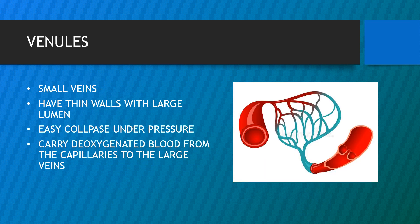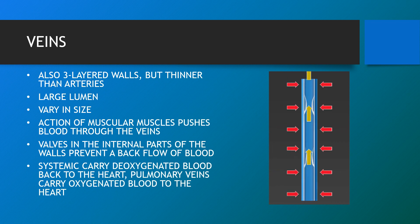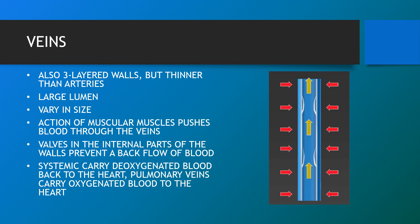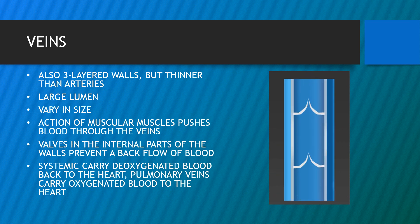A venule is a small blood vessel in the microcirculation that allows deoxygenated blood to return from capillary beds to larger blood vessels called veins. Venules have thin walls with large lumens and easily collapse under pressure. In comparison to arteries, venules and veins withstand a much lower pressure from the blood, have considerably thinner walls and larger lumens, allowing more blood to flow with less vessel resistance. The action of the skeletal muscles pushes blood through the veins, and valves in the internal parts of the walls prevent backflow of blood. While veins carry deoxygenated blood back to the heart, the pulmonary veins carry oxygenated blood to the heart.